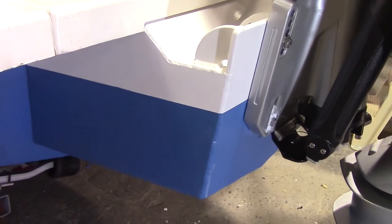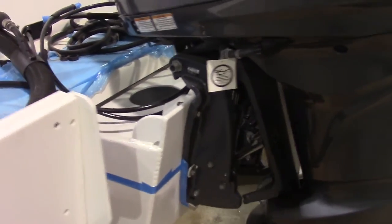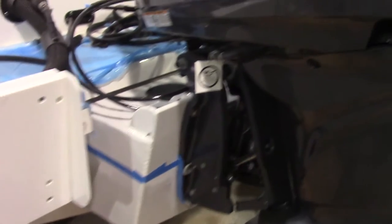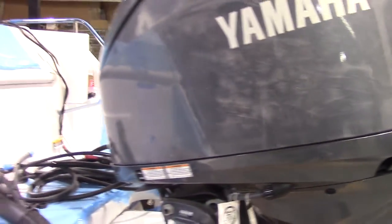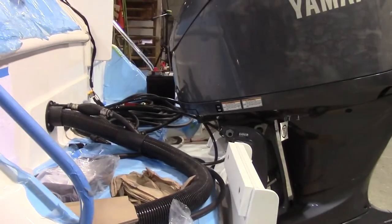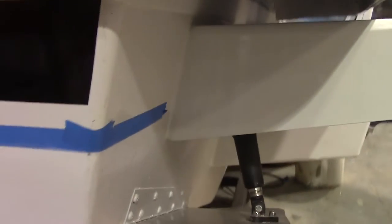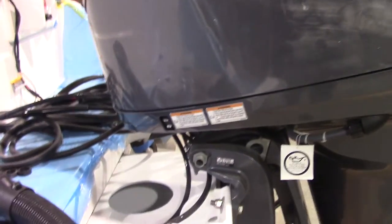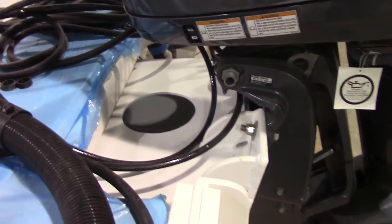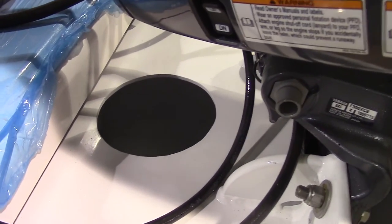Here's a different design. This is a much shorter pod. That's because the transom, as you can see, is forward. The transom up here is forward of the hull down here. That's just the design of the boat, so we didn't need to make the pod so long.